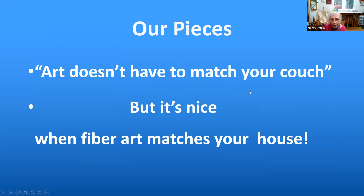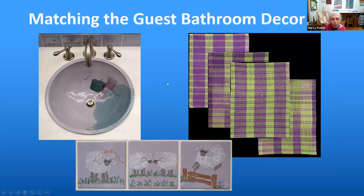You may have heard the saying that art doesn't have to match your couch. The nice thing about fiber art is that we have total control over it, so yes, we can make our fiber art to match our house. We have a guest bathroom called the purple sheep bathroom. The sheep aren't purple, but the bathroom is. We have a sink made by a local potter, and I commissioned a tile artist friend to make tiles with sheep and purple. Eventually my guest bathroom towels wore out, so I dyed some Cotland in green and purple for the warp and weft. I wanted each towel to be different, and the stripes fall in randomly. Each towel is unique.